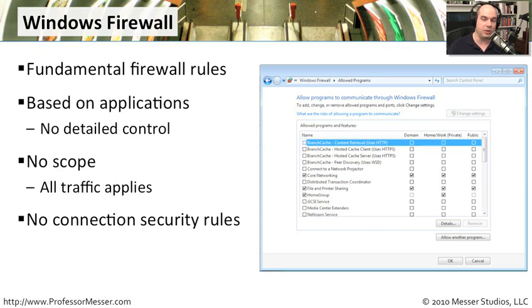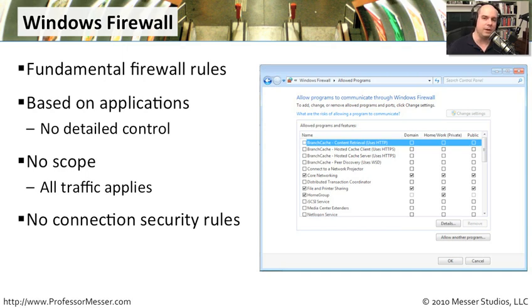There are also no connection security rules in the basic Windows Firewall. Very often we're setting up tunneled connections across encrypted links through VPN-type connections, and this firewall doesn't apply to those. We'll look at those options when we get into the advanced settings. Let me give you a quick tour of the built-in Windows Firewall functionality.